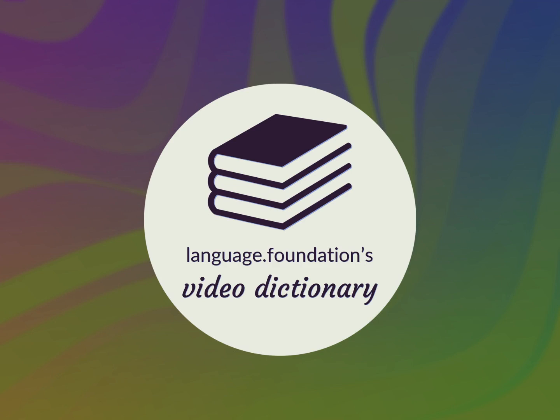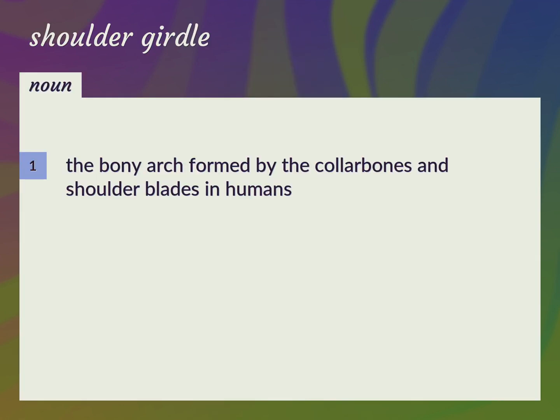Language.Foundation's Video Dictionary, helping you achieve understanding. The bony arch formed by the collarbones and shoulder blades in humans: Pectoral Arch.